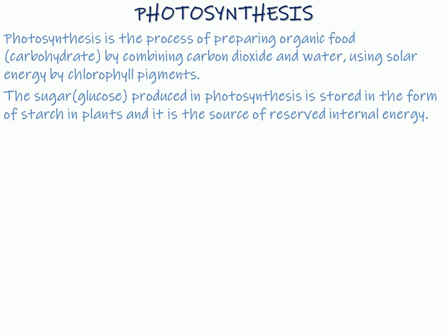Now let us go through the requirements that a green plant must have to perform photosynthesis. First of all, it is sunlight. Sun is the natural source of light for photosynthesis. This suggests that photosynthesis is done by the green plants to prepare their food as they are autotrophic in nature.